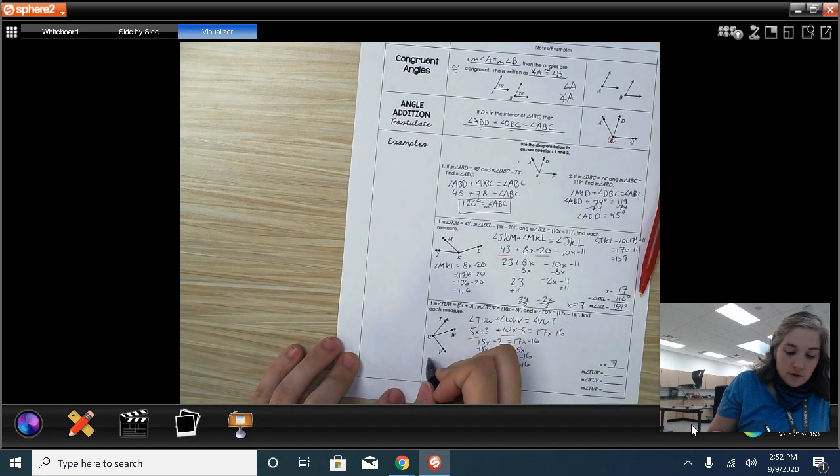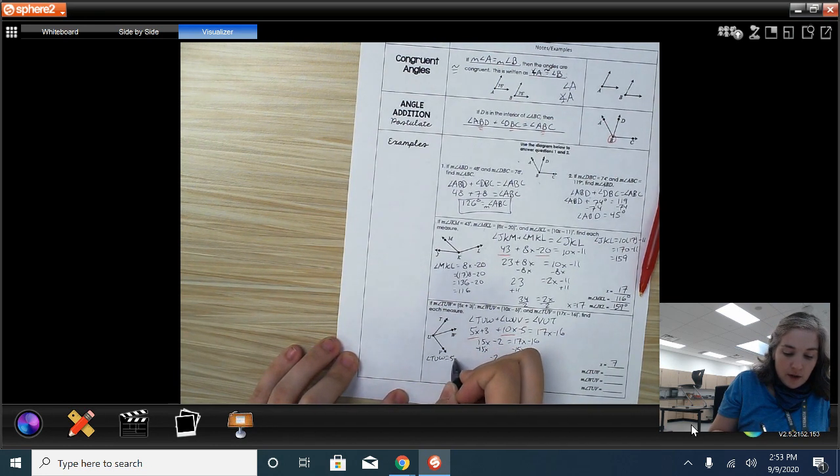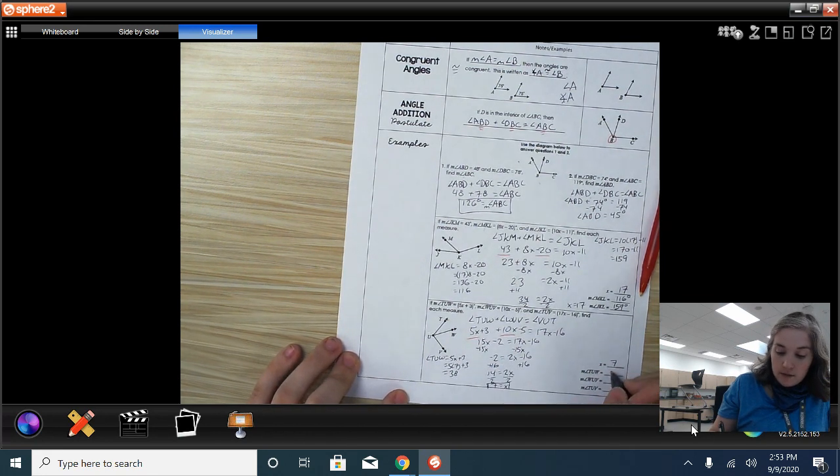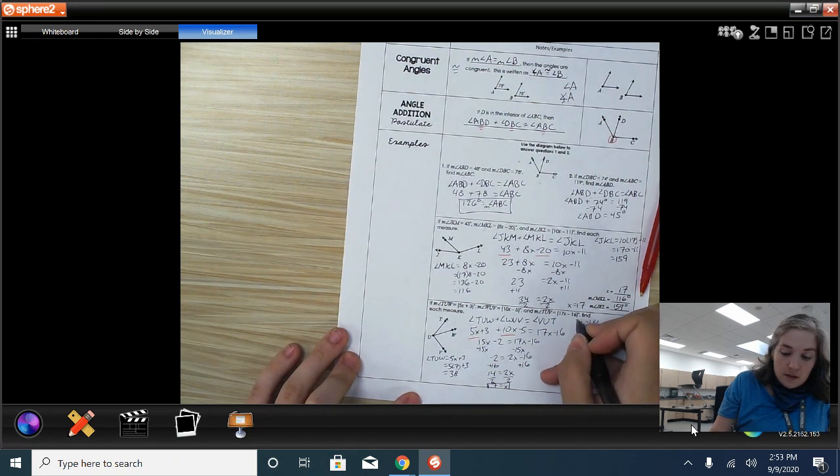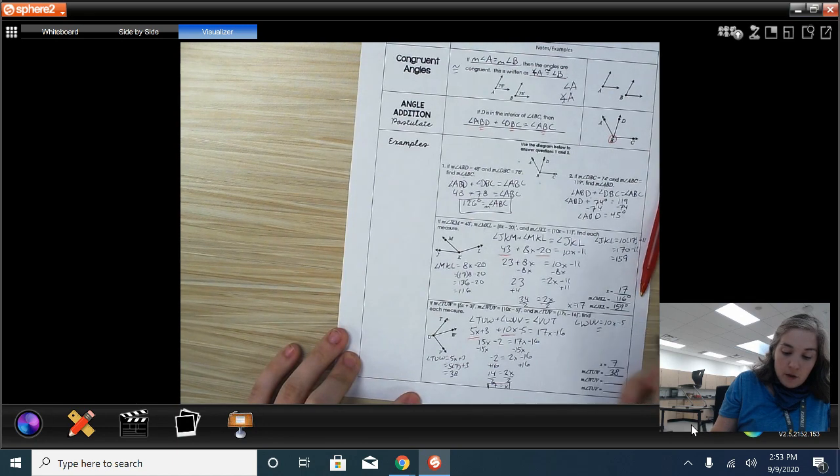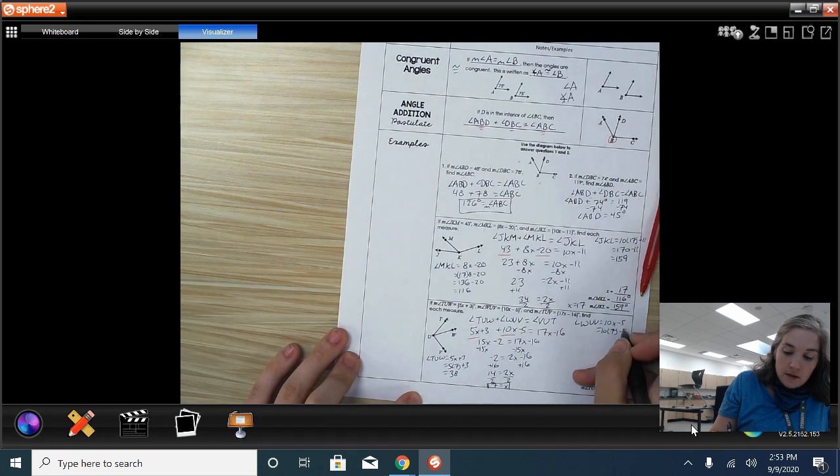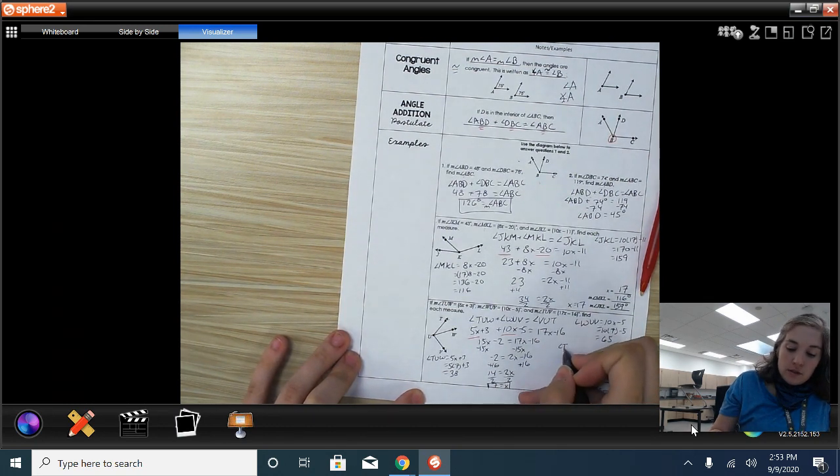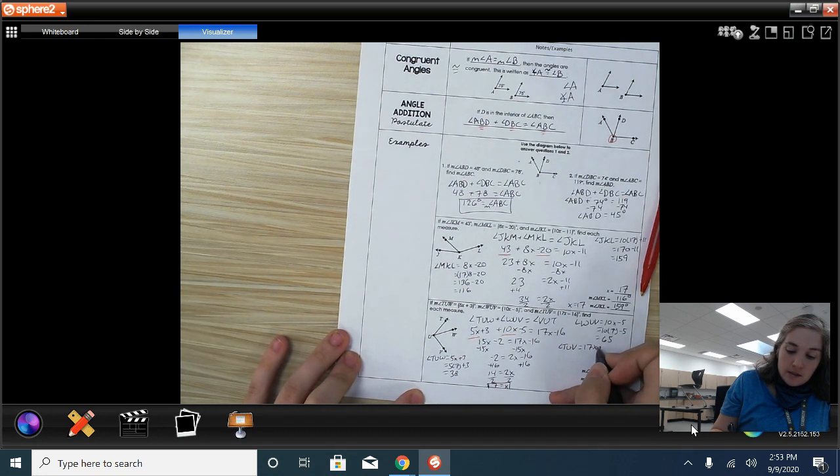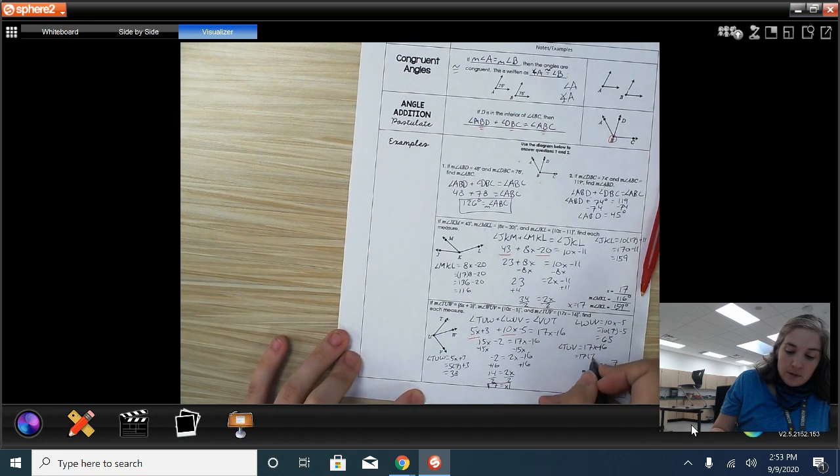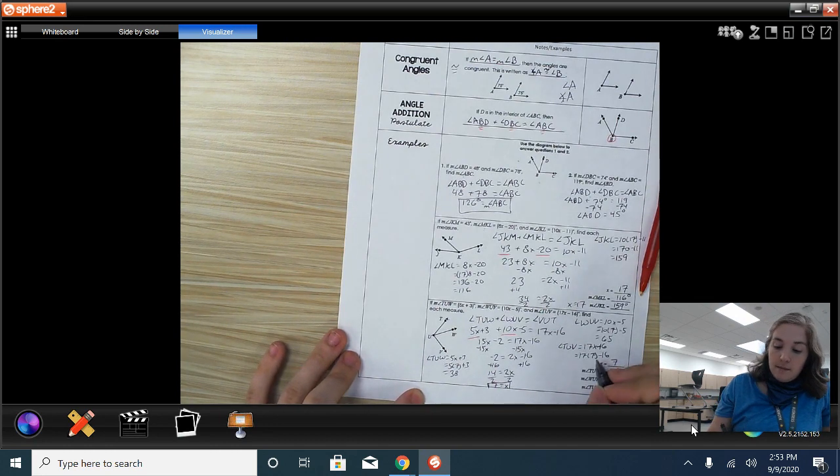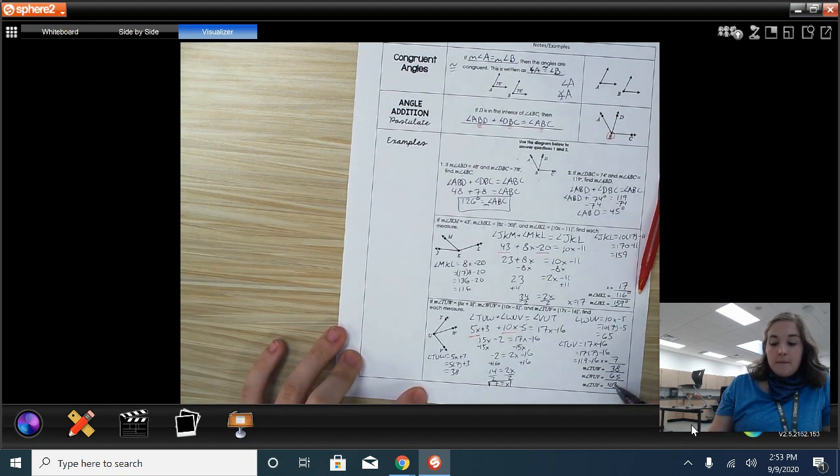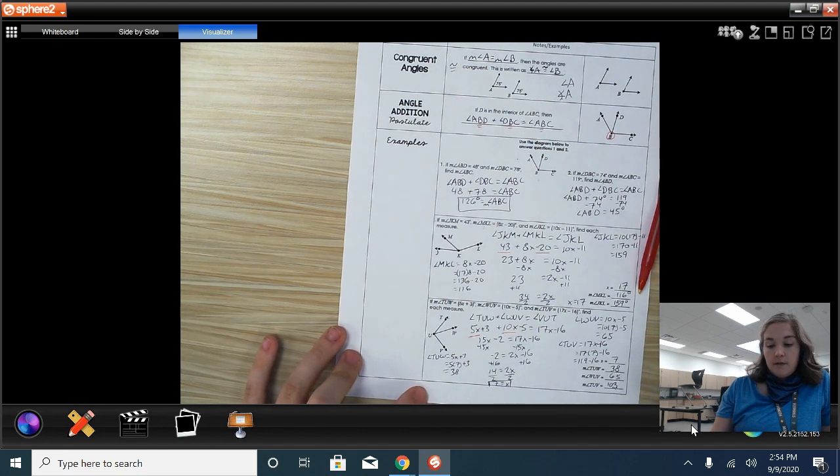Now, we have to find the measure of each angle. So, angle TUW is 5x plus 3. So, that would be 5 times 7 plus 3. Well, 5 times 7 is 35. Plus 3 is 38. WUV is next. Angle WUV, which is 10x minus 5. We found that x was 7. So, we have 10 times 7, which is 70. Minus 5. 70 minus 5 is 65. And then, the last angle is angle TUV, which is 17x minus 16. So, that would be 17 times 7 minus 16. That's 119 minus 16. So, we would get 103. Another option for finding this one is you could just take 38 plus 65 to get it, right? So, that works too.